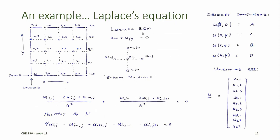As an example, let's consider Laplace's equation, for which f is equal to zero. We'll apply Dirichlet conditions, which means that we know the values of the dependent variable u on all boundaries of the domain. We'll divide our domain up into a five by five mesh of grid points, which gives us 25 points for the dependent variable u. However, 16 of those 25 points lie on the boundaries of the domain where u is known, and 9 of those points lie on the interior of the domain where u is unknown.